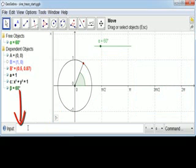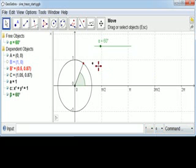So let's come down here to the input bar and start typing a capital C for a new point. And like I said, we want the x-value to be alpha and then we want the y-value to be the y-value of B prime. And that will give us this point right here.